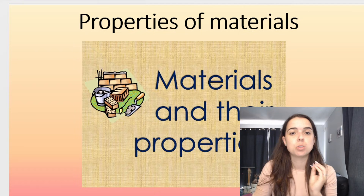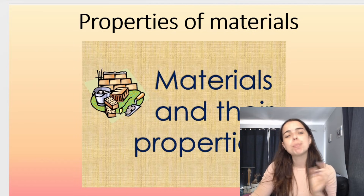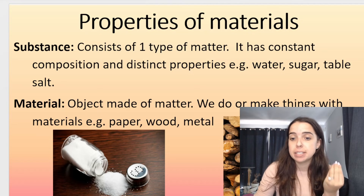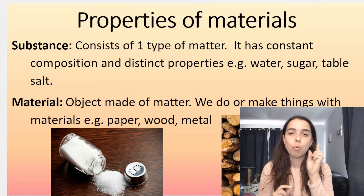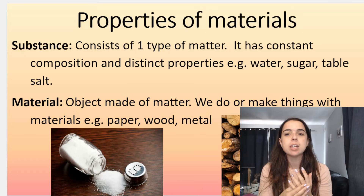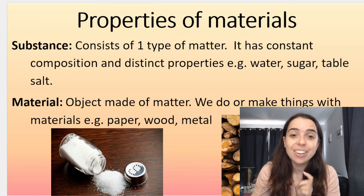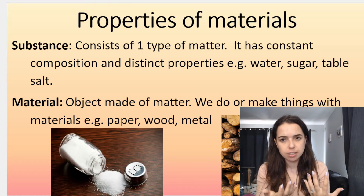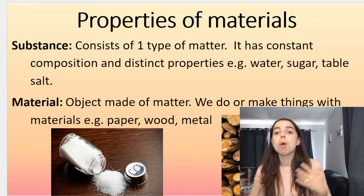Properties of materials — this is also very important, listed in your ATPs, you need to know this. Before we look at properties of materials, I need to explain the difference between a substance and a material. A substance consists of one type of matter, so it has a constant composition and distinct properties — for example, salt, water, or sugar. Materials are objects that are made of matter; we do things with materials, like paper, wood, or metal. These are materials.